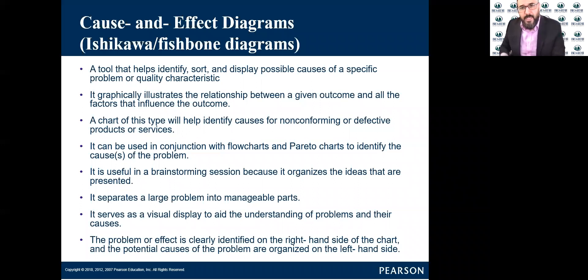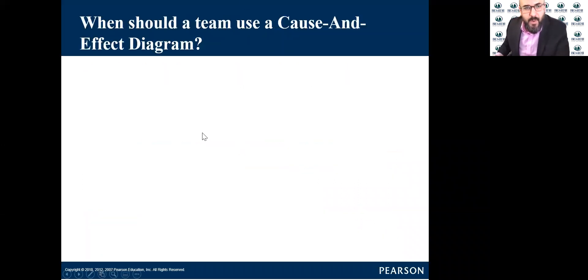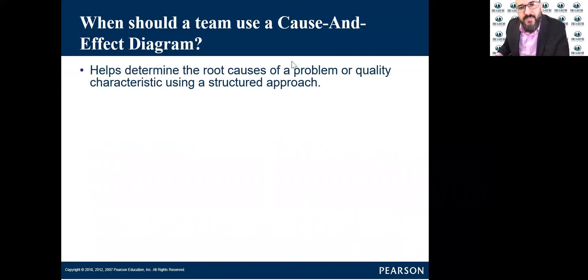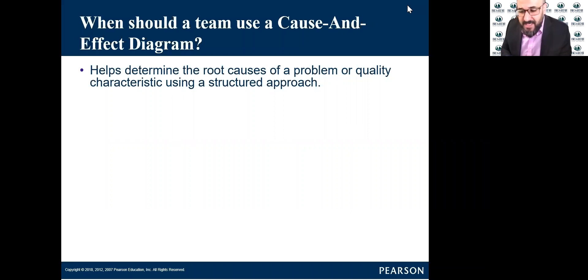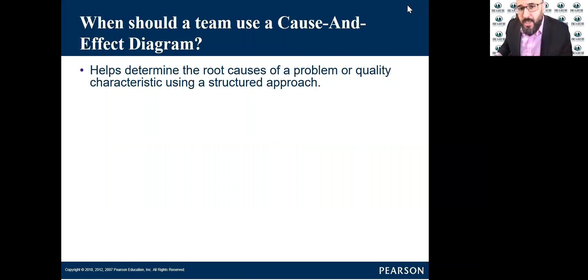Before we go ahead and take an example, let's cover more information about why teams should use the fishbone diagram. It helps determine the root cause of a problem or quality characteristic using a structured approach. Instead of just guessing or brainstorming without a structure or systematic procedure, this tool guides you to the root cause of a problem in an organized, step-by-step way.